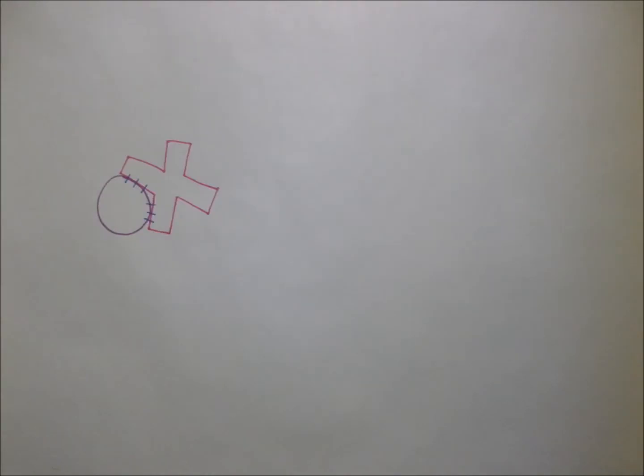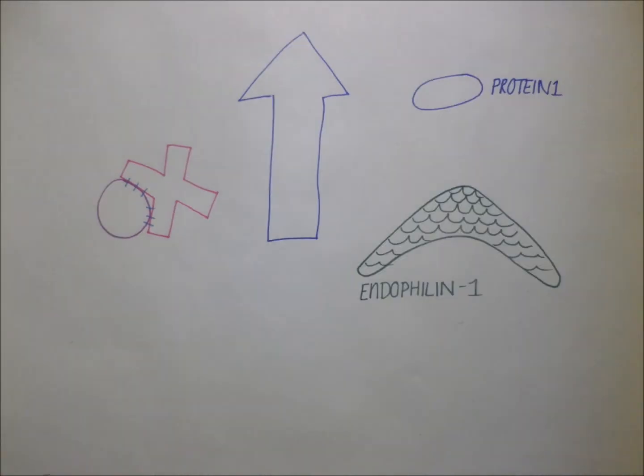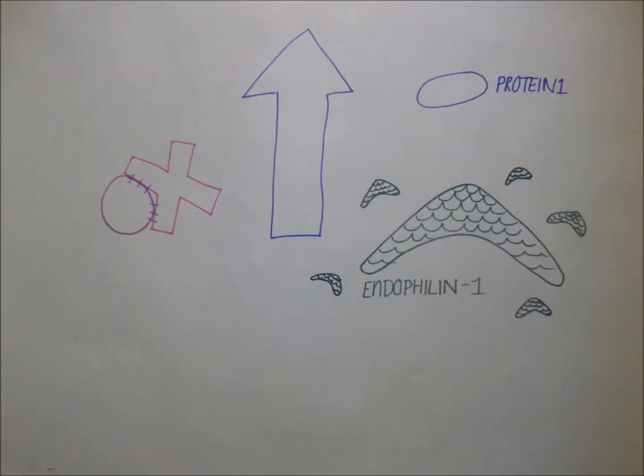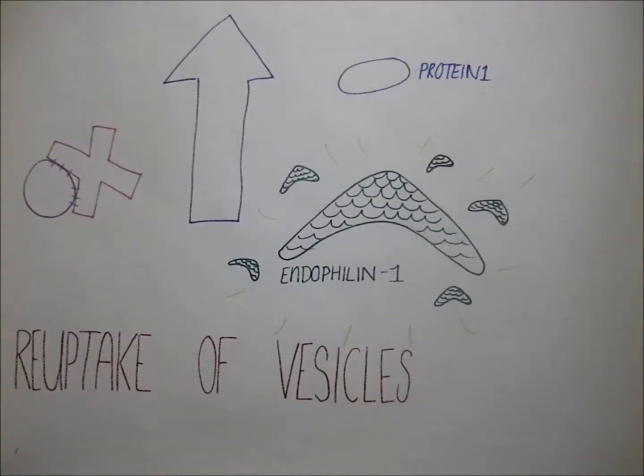The interaction of beta-amyloid and ABAD also promotes the upregulation of yet another two proteins, one of which is endophyllin 1. In normal concentrations, endophyllin plays a part in the reuptake of vesicles in synapses.